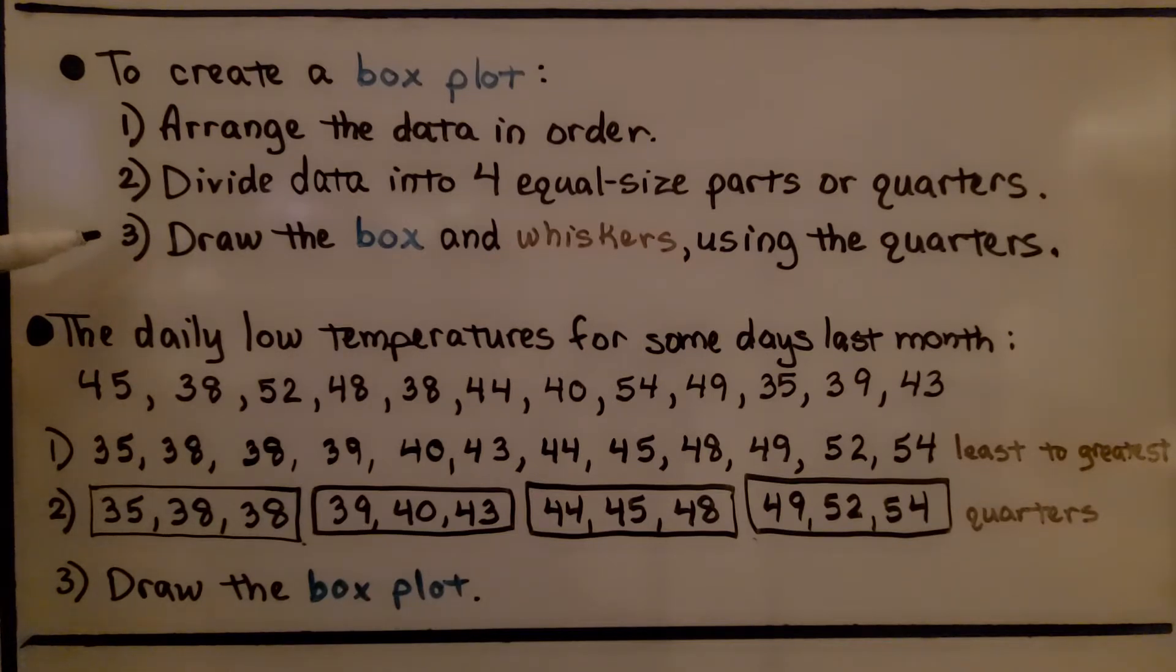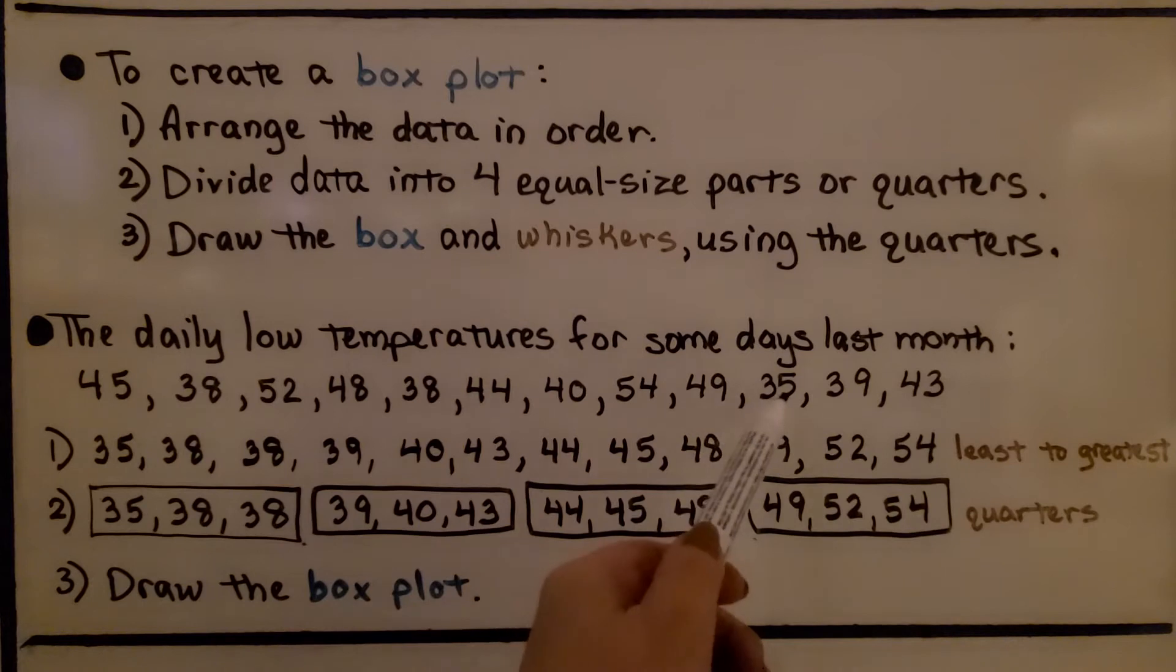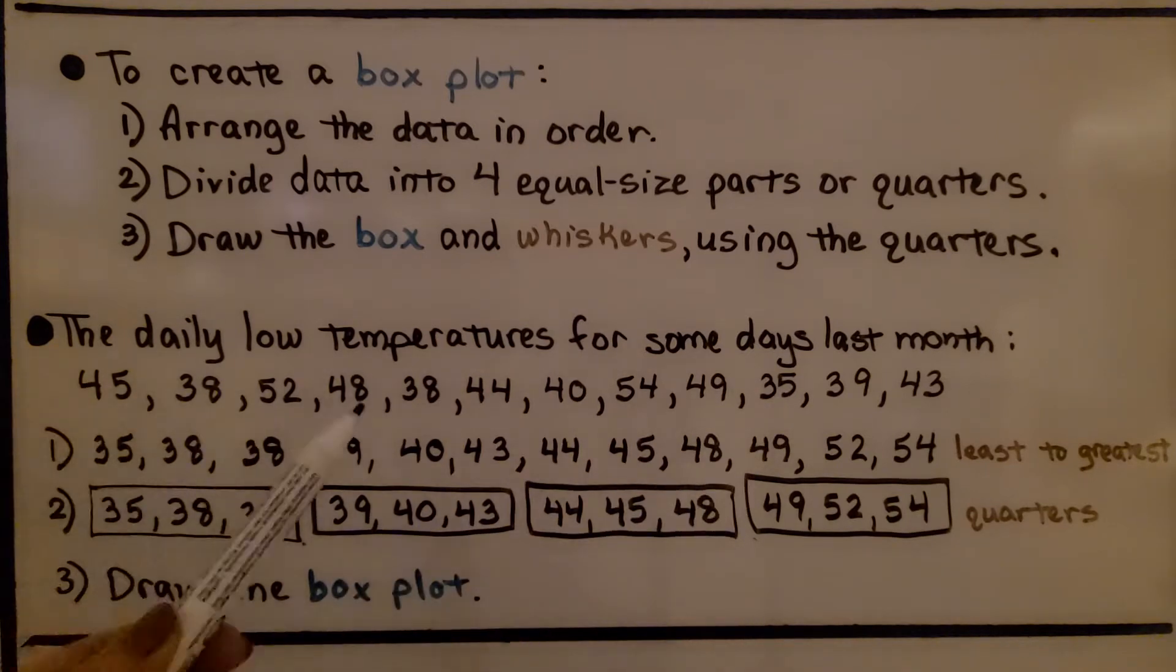And we draw the box and whiskers using the quarters. So here's the daily low temperatures for some days last month, and we can see they're not in order, are they? We've got a 35 here and a 45 here. We put them all in order from least to greatest.